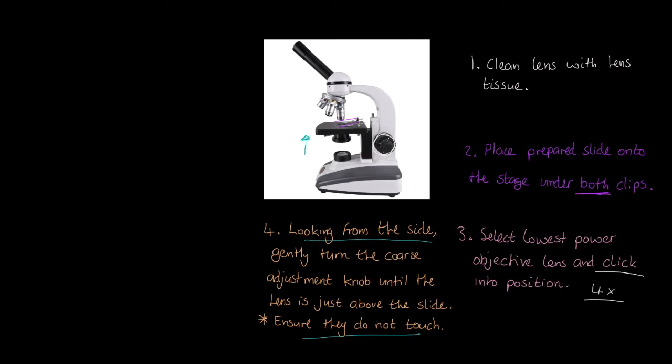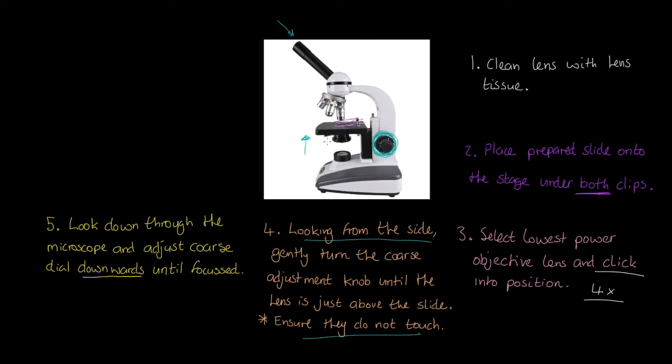Next in our process, number five, look down now through the eyepiece and adjust the course dial downwards until focus. So now what we're doing is we're using the course adjustment knob, and we're bringing the stage down until we get a focused image. It's important that we adjust downwards in this stage.